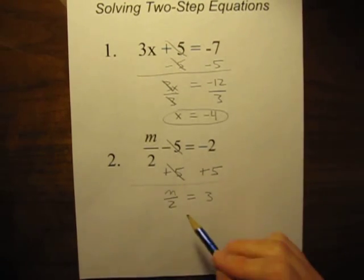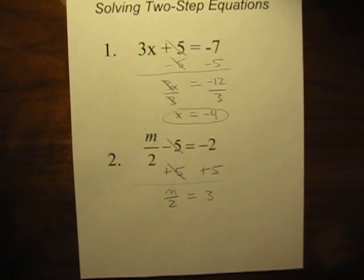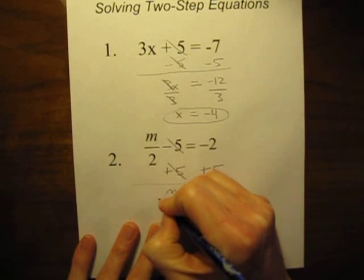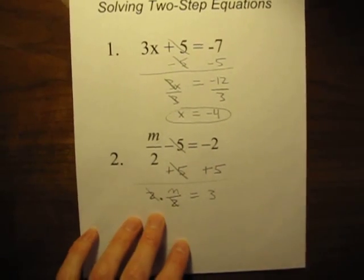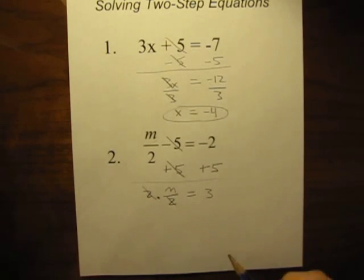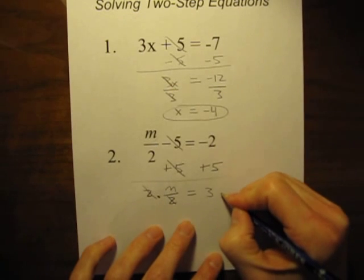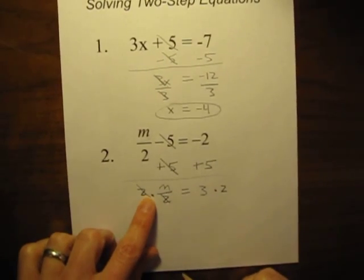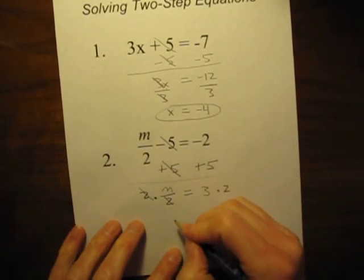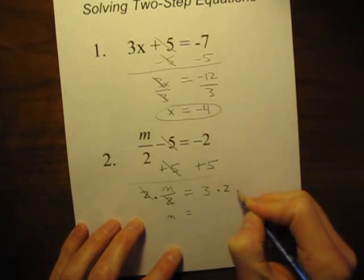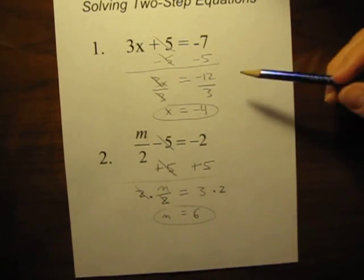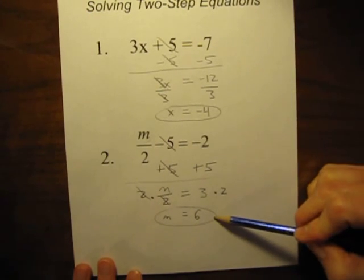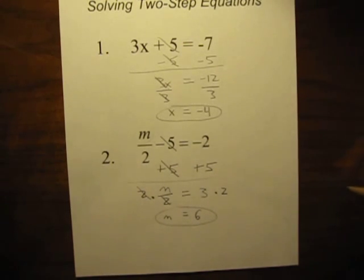Now let's get m by itself. How do you get rid of a divided by two? You do the opposite — the opposite of divide is multiply. So to get rid of divided by two, we multiply by two. Two divided by two is one, so they cancel. Remember, equations are like a teeter-totter: if you make a change to one side, you need to make the same change to the other side to keep it balanced. Multiply both sides by two, and m is equal to three times two, which is six. Hopefully you got x equals negative four for the first one and m equals six for the second.